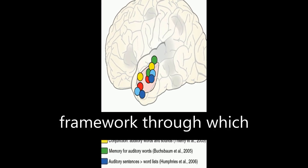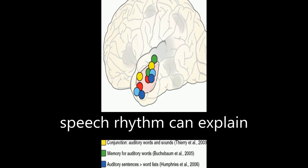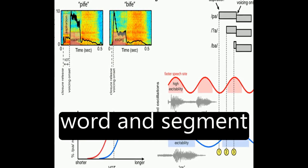The article suggests a framework through which neural entrainment to speech rhythm can explain effects of speech rate on word and segment perception.